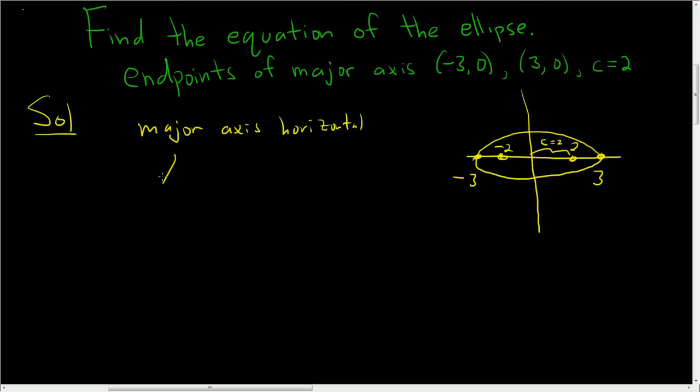That means that we have x squared over a squared. The bigger number is under the x when the major axis is horizontal. If the major axis is vertical, then a squared is under the y term, so this is equal to 1.